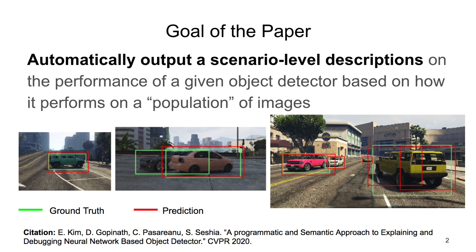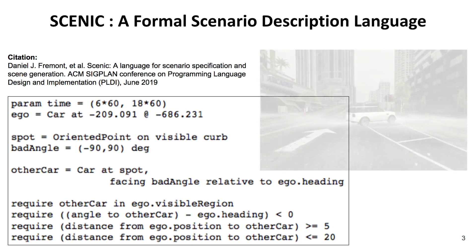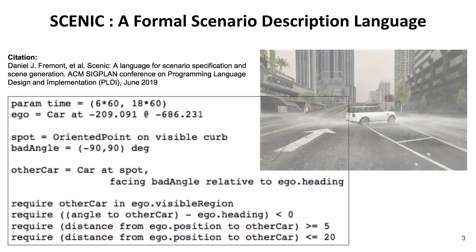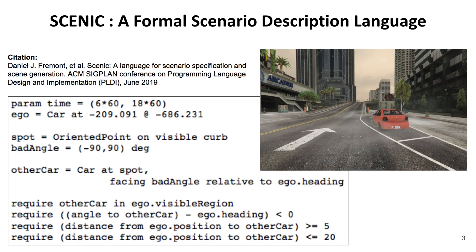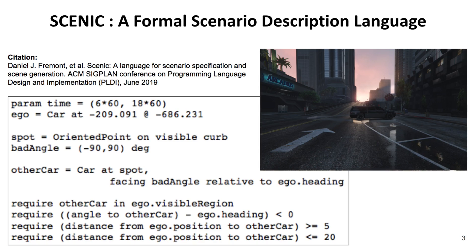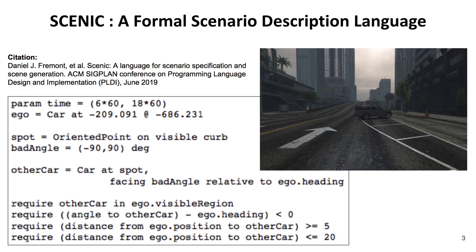To describe our approach, we need to first clarify what a scenario is to us. In our work, scenarios are written in Scenic, which is a probabilistic programming language that allows users to easily describe complex geometric relations among objects using semantic features, which will be covered in the next slide.